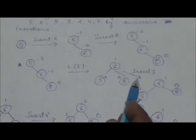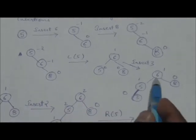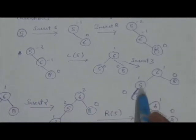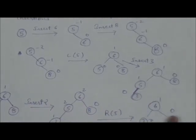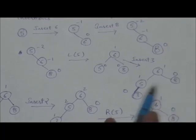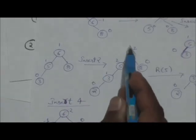After that we will insert the key 3. When we insert key 3, we get this AVL tree, which is also balanced. Next, we will insert key 2 on this tree, and when 2 is inserted this tree becomes unbalanced.